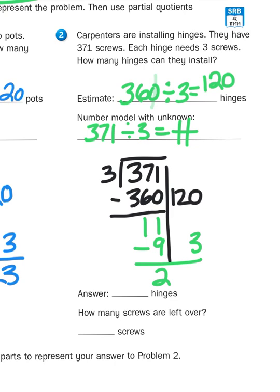And when I check my difference here, I see that the number I'm left with is smaller than my divisor. So that means I have no more groups of 3 I can pull out of this amount. So I'm done. So what's my total? Well, I'm going to add 120 to 3, which of course gives me 123 sets of hinges, okay?